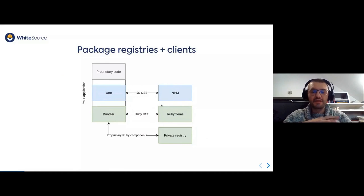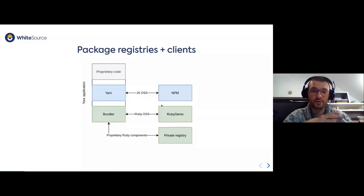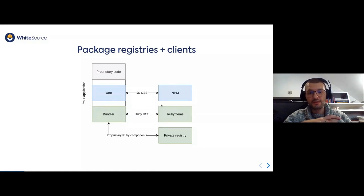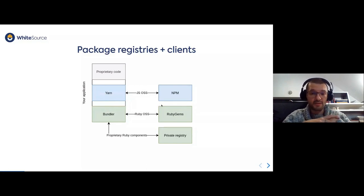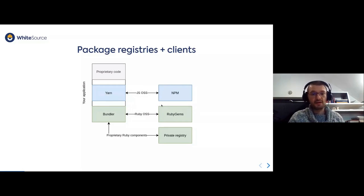Package registries, together with the package registry clients, allow you to describe the state of your dependencies. Usually, applications are combined out of your own proprietary code and, depending on technology, one or more open source clients and registries. Here's an example of how that works with a simple Ruby plus JavaScript application, where you define your open source dependencies for JavaScript, Yarn picks it up — Yarn is one of the clients for NPM — and it downloads the software from NPM.